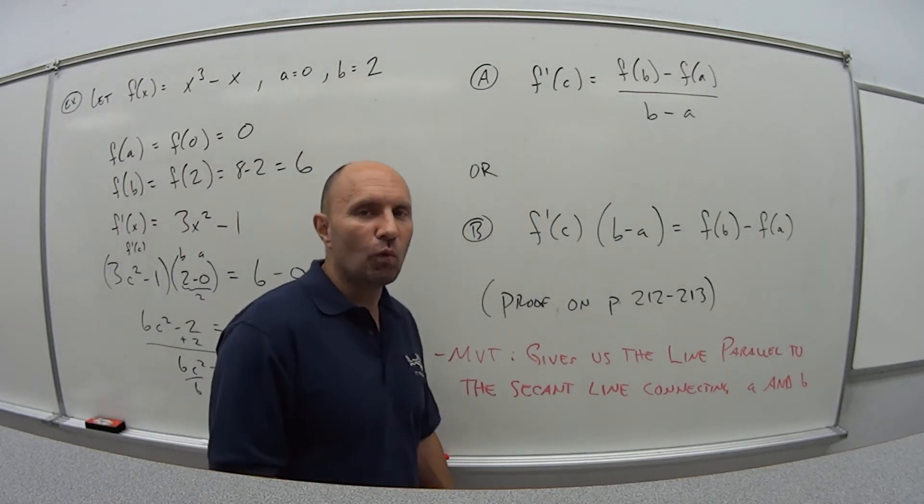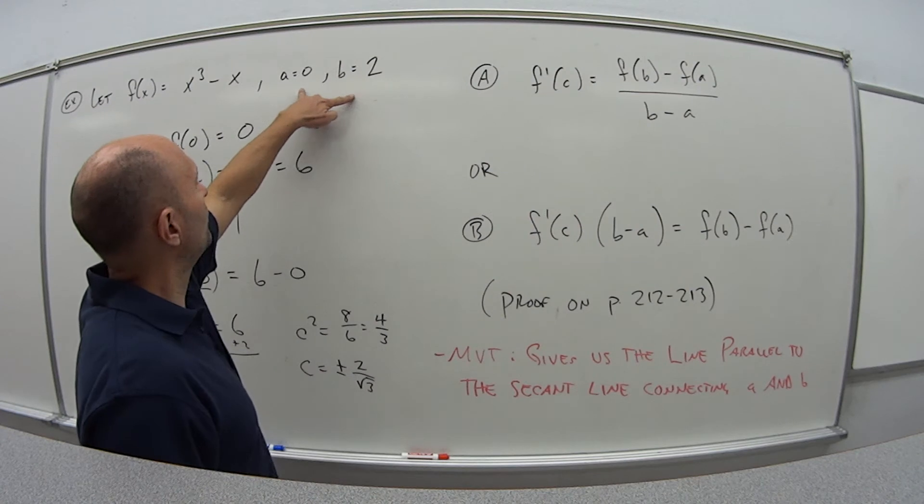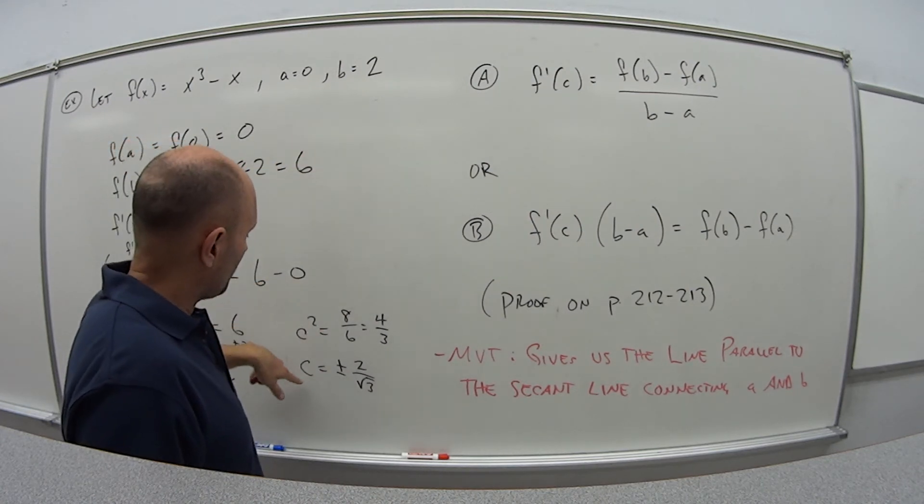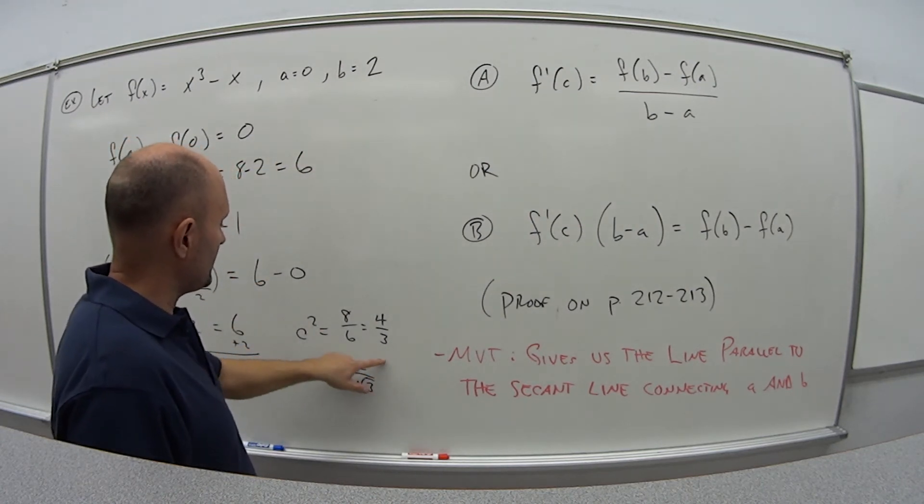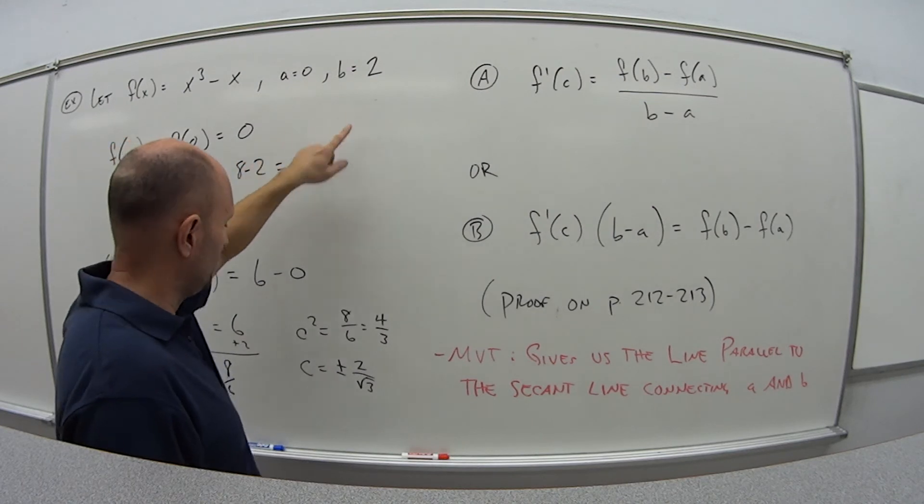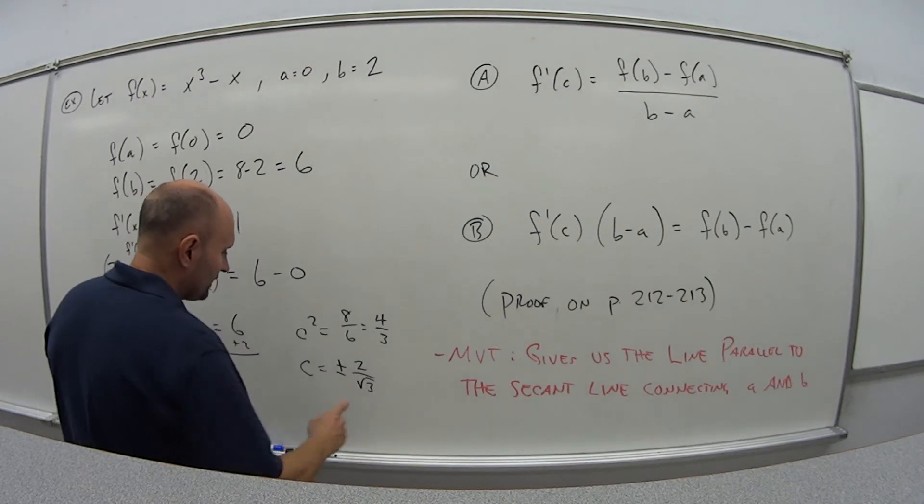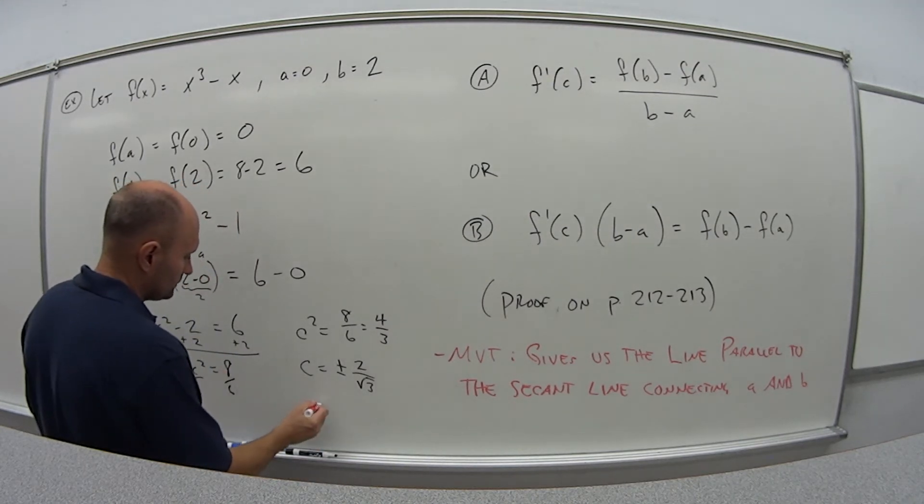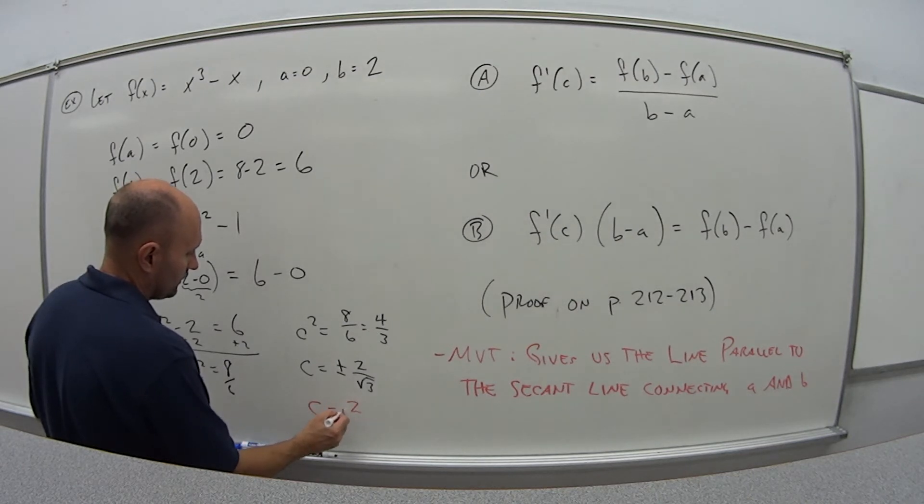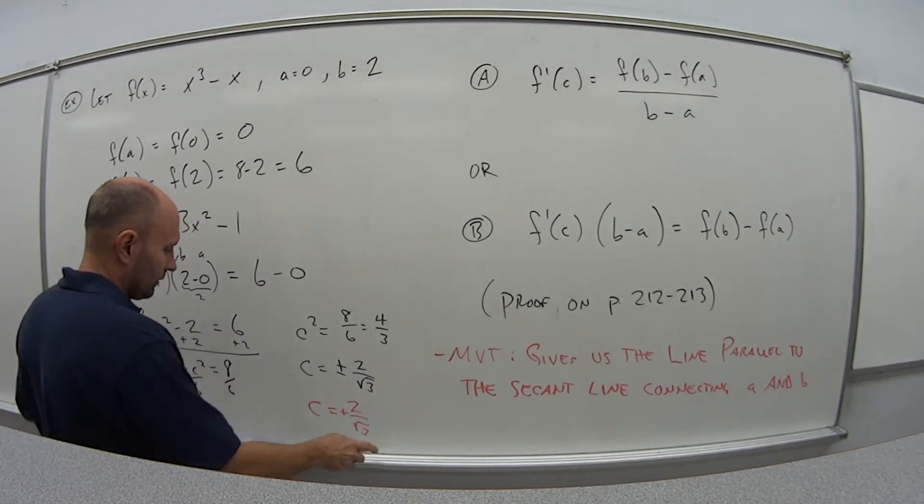But I'm looking, what's my interval? My interval is 0 to 2. So I only want the values of c that fall within this interval. So I don't have any negative possibilities. So in this case, my value c is equal to positive 2/√3.